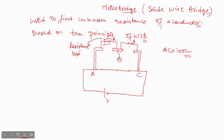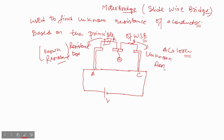This R is basically the known resistance, and the unknown resistance connected here is S. Now, what happens when current flows? It will pass through these, and the galvanometer will slowly be moved along the wire.